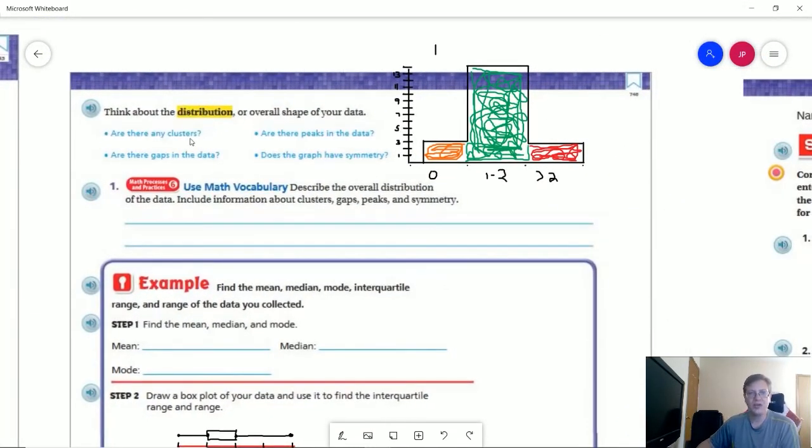Are there any clusters? Not really. I don't have any gaps in my data. Because there are not any gaps, I don't really have a cluster unless you want to say that every single thing is clustered together. Are there peaks in the data? Yes. If I'm looking at this, my peak would be for my number of people that have one and two pets.